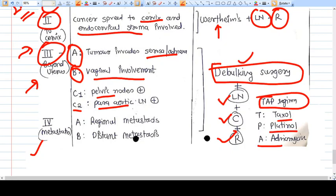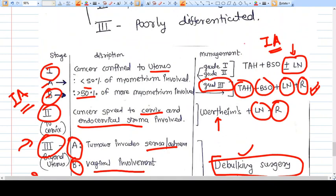So chemotherapy TAP regimen is there. What is TAP? T means Taxol, P means Platinol, and A means Adriamycin. So if you're consulted on the management of endometrial carcinoma, TAH and BSO must be done. Lymph node metastasis or lymph node sampling can be avoided in very basic first stages of adenocarcinoma, but you should do it.